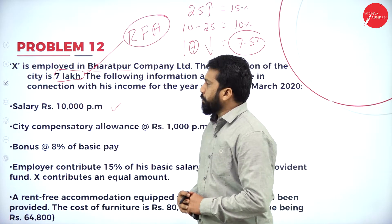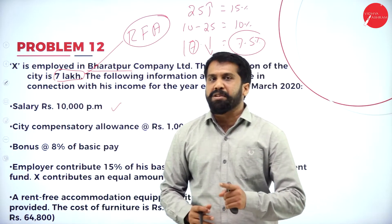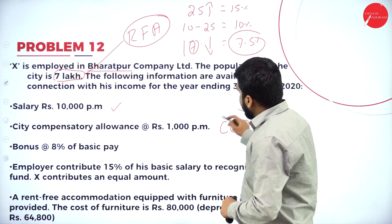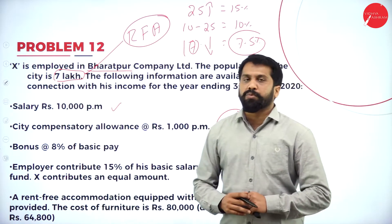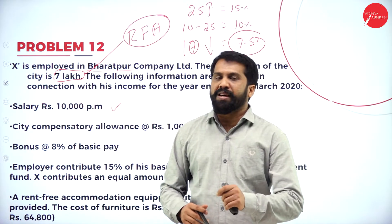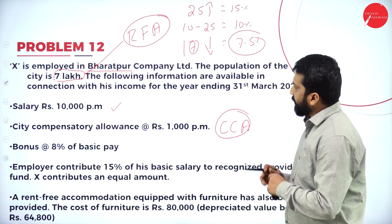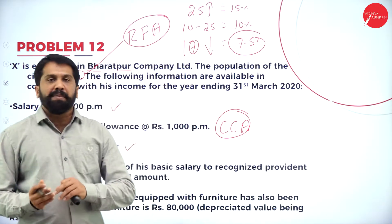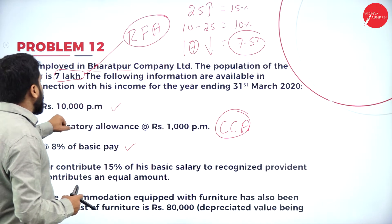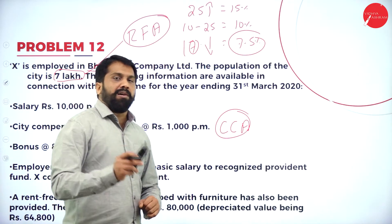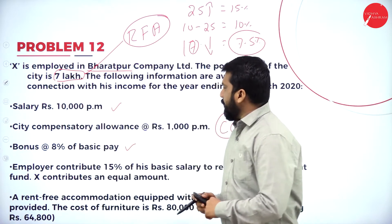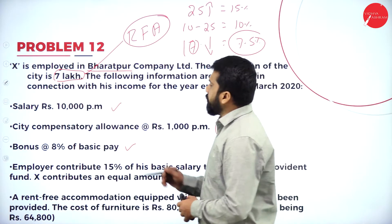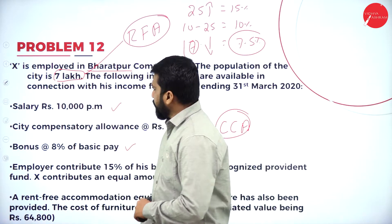Salary is 10,000 per month. 10,000 multiplied by 12 will be your salary part. City compensatory allowance (CCA) is 1,000 per month — 1,000 into 12 will be your calculation. Bonus is at 8% of basic pay. Basic pay is 10,000 per month, so 8% of 10,000 comes to 800, making 800 your bonus.